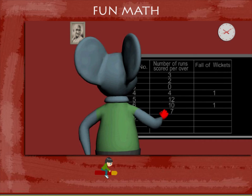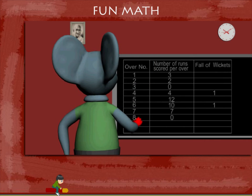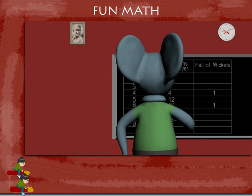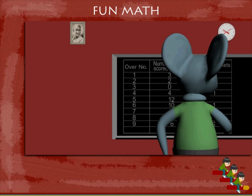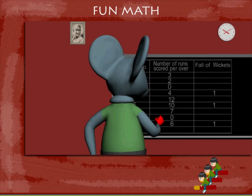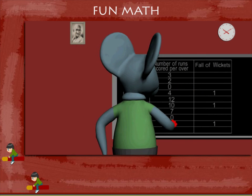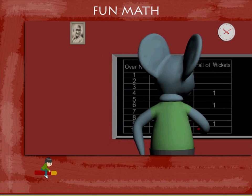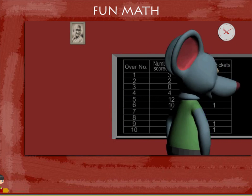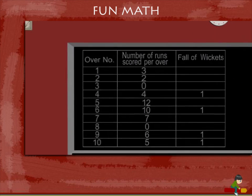In the seventh over, seven runs. In the eighth over, no runs, zero. In the ninth over, six runs and one more wicket fell. In the tenth over, five runs scored but one more wicket fell.